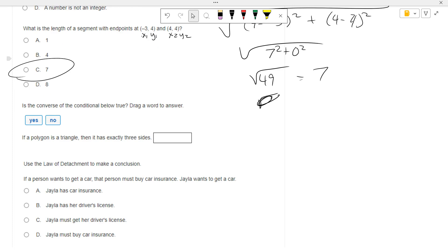Is the converse of the conditional below true? If a polygon is a triangle, then it has exactly three sides. So the converse would be if a polygon has exactly three sides, it's a triangle. Is that true or false? True. That is true. So that would be yes. It is true.